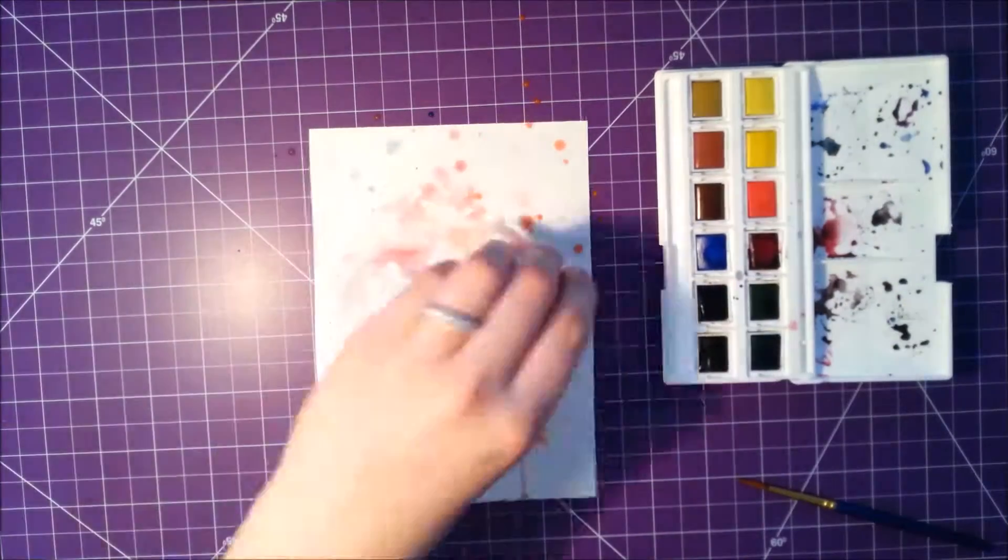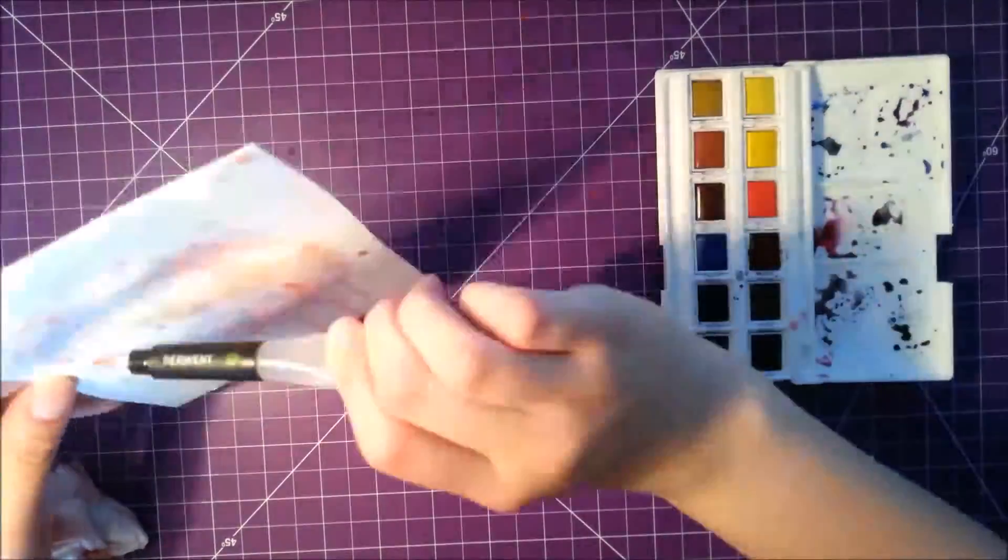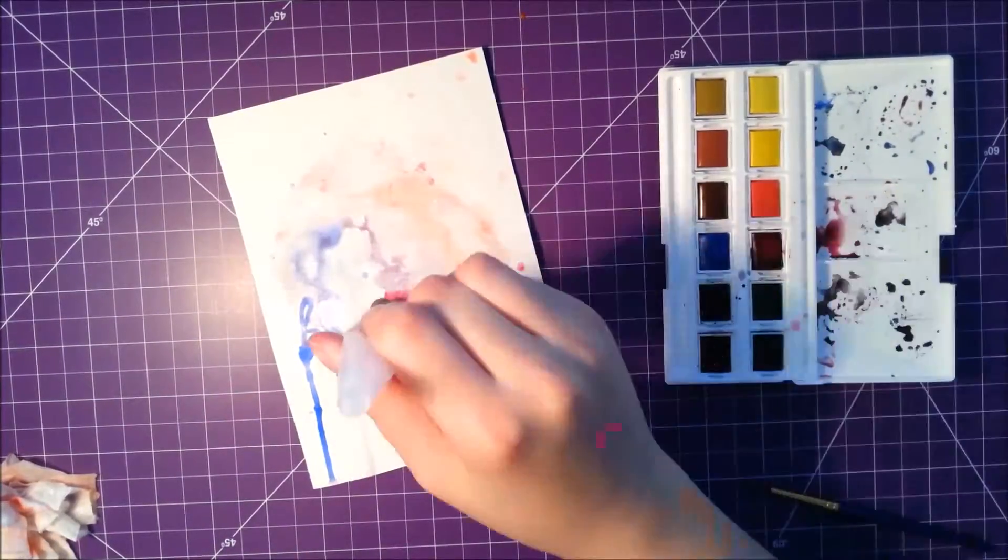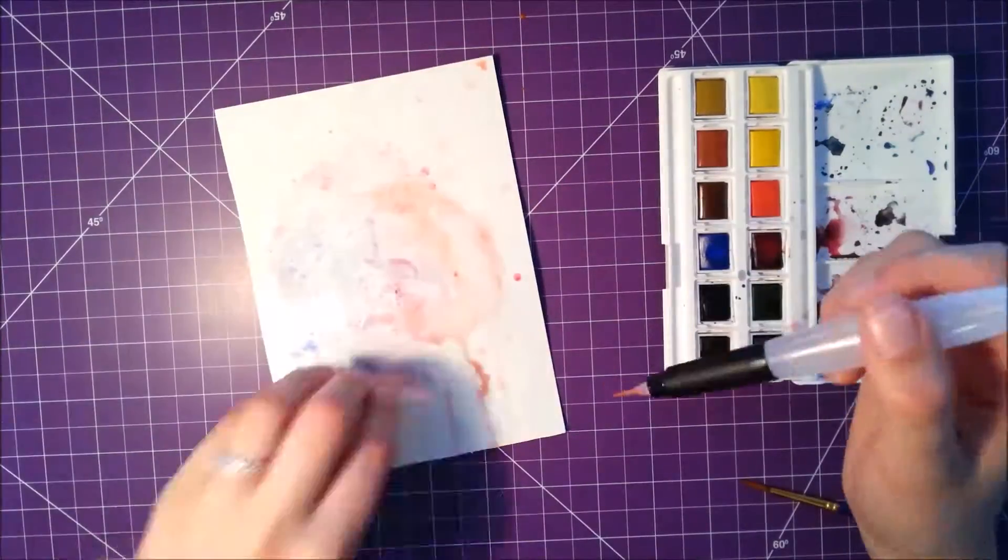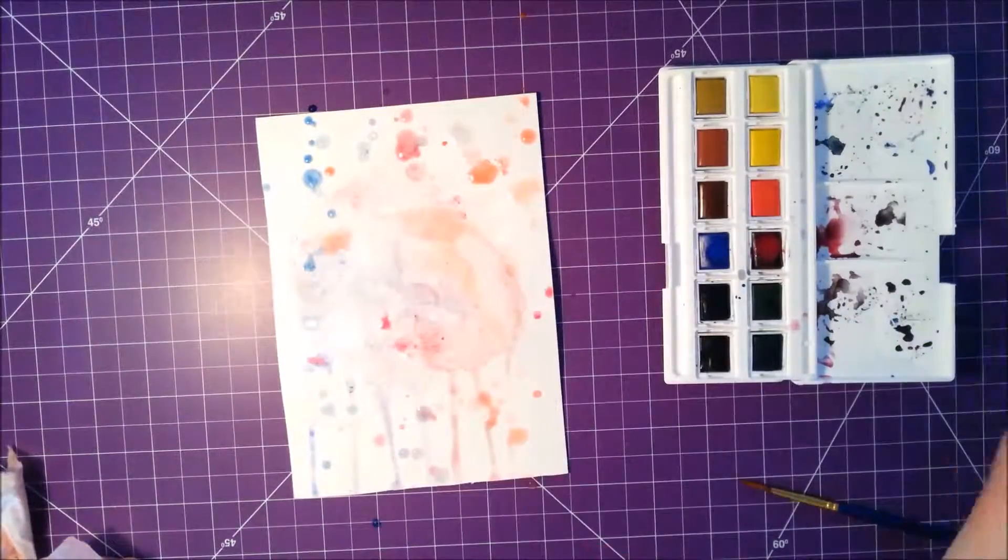And the brush that I'm using is a Derwent watercolor brush. It's like the aqua pen one or whatever - I don't think I'm saying that right - but the one where you put the water into the brush. And it was my first time trying out that brush since I got it in my art haul video. I'll link that above.